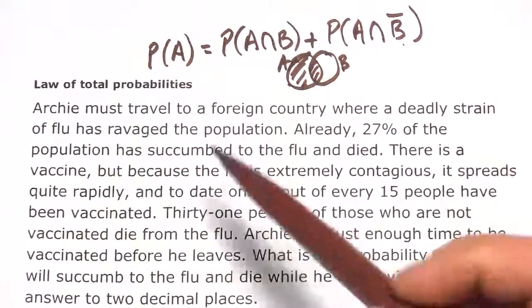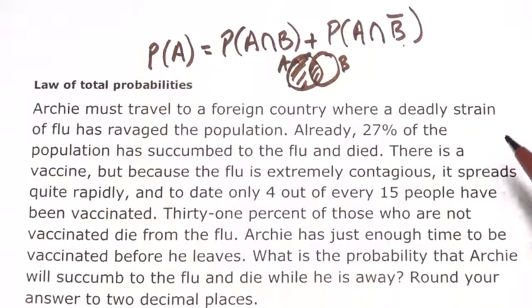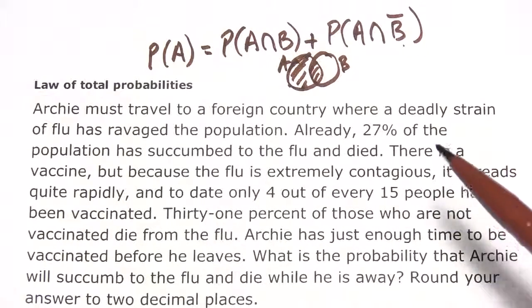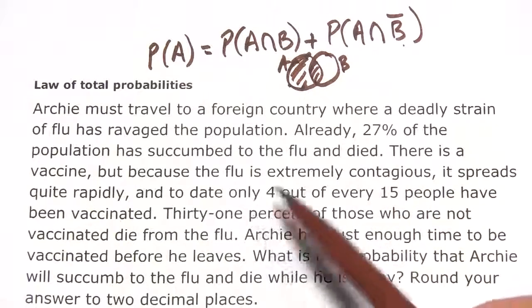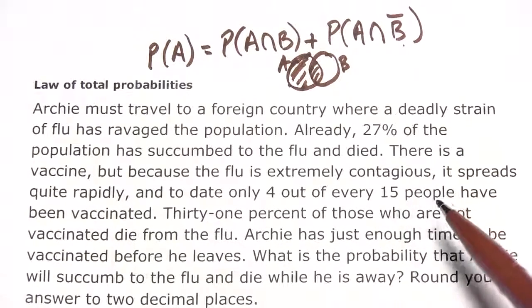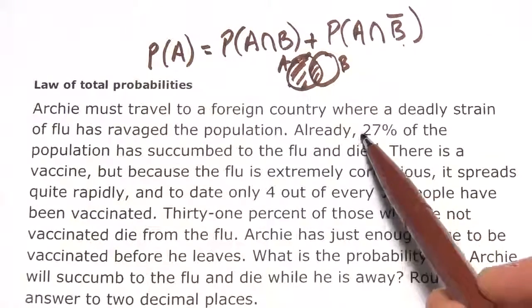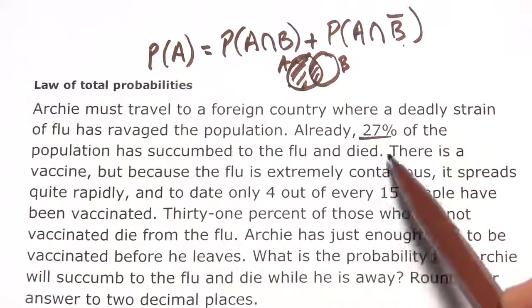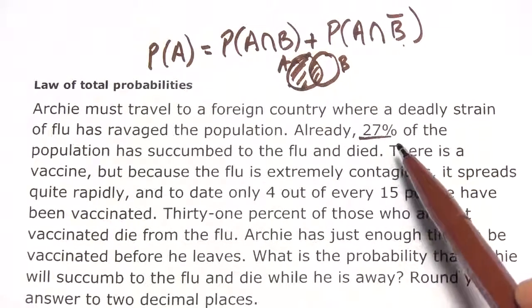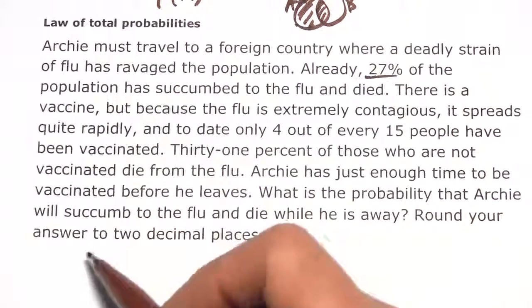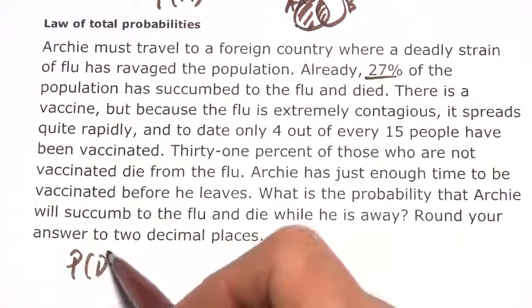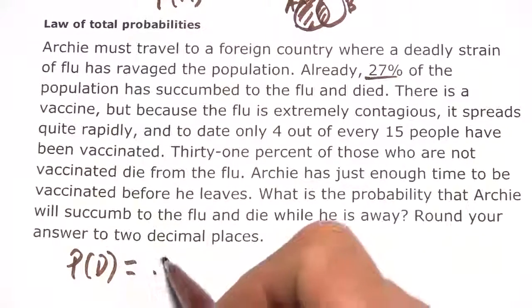Let's take a look at this problem. It says that Archie must travel to a foreign country where a deadly strain of flu has ravaged the population. Already, 27% of the population has succumbed to the flu and died. That's our first number here. The probability of dying from the flu is 27% or 0.27. I'll write that as the probability of death, P(D) = 0.27.